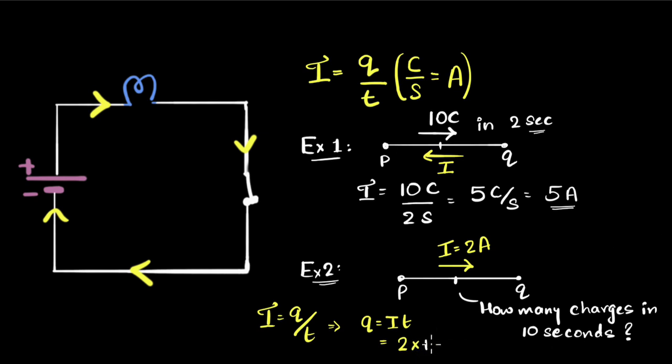And so Q will be equal to two amperes multiplied by the time, which is 10, and that will be 20 coulombs. So 20 coulombs of charge is flowing through this point.